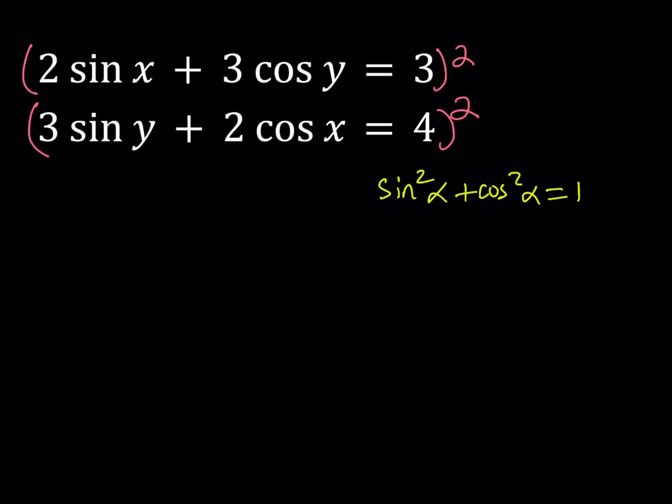Once I square the first one, I should be getting something like 4 sine squared x plus 12 sine x cosine y, we forgot the last term, which is 9 cosine squared y, and that should equal 9.